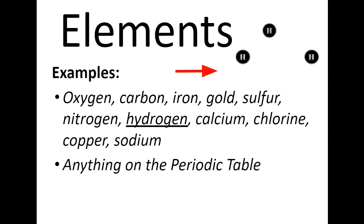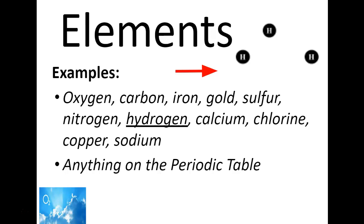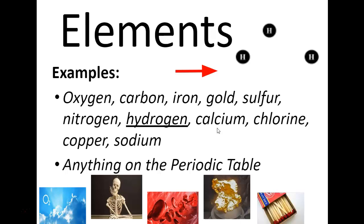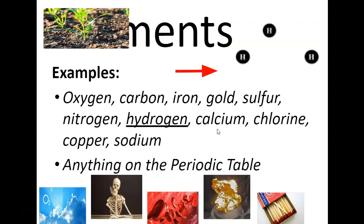What are some examples of elements that are on the periodic table? Well, you have oxygen. That's in the air that we breathe. We have carbon, which is a metal. You have that in your bones. Iron in a magnet or in a nail. Also the iron in your blood. Gold is an element. Sulfur in matches. Nitrogen in the soil to help plants grow.